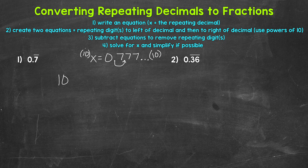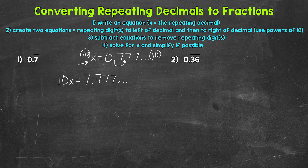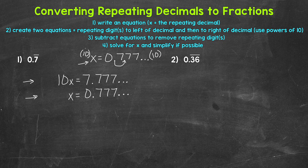This gives us 10x equals 7.7 repeating. Now that we have the repeating digit 7 just to the left of the decimal, we need an equation where the repeating digit 7 is just to the right of the decimal. We actually already have this equation written: x equals 0.7 repeating. So here is our equation with the repeating digit just to the left, and here is our equation with the repeating digit just to the right.